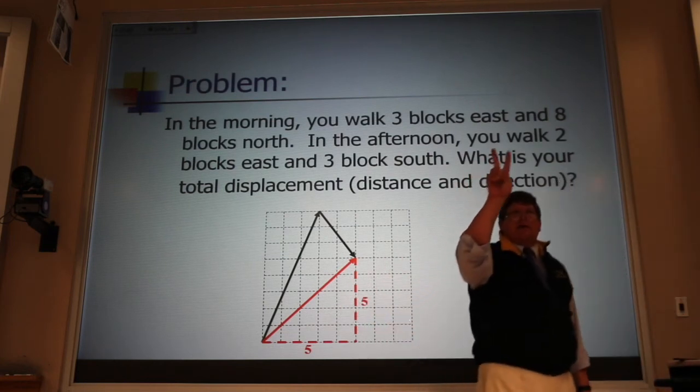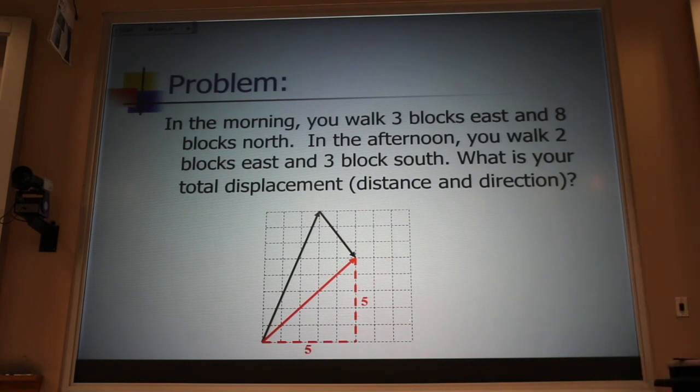And now we're solving that second trick problem we talked about, where we find the total displacement, the magnitude of that vector, using Pythagorean theorem. And then we find that angle using the inverse tangent.